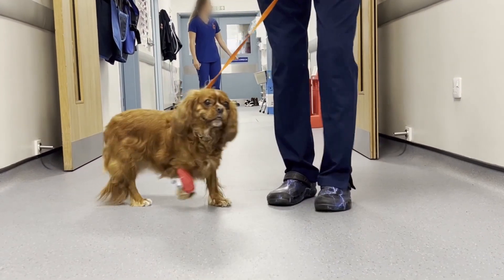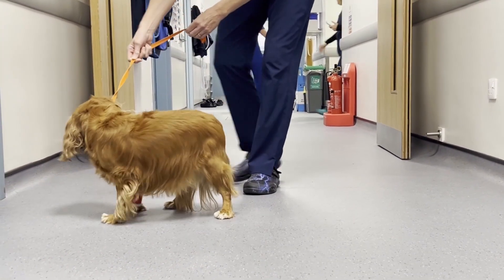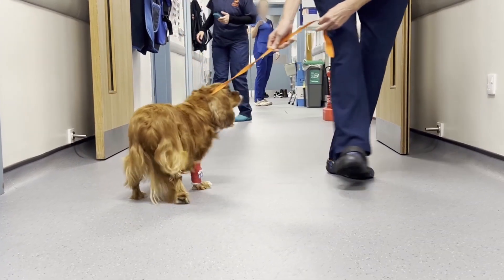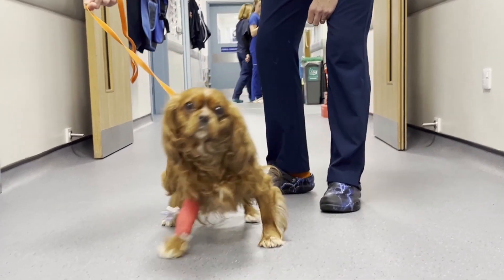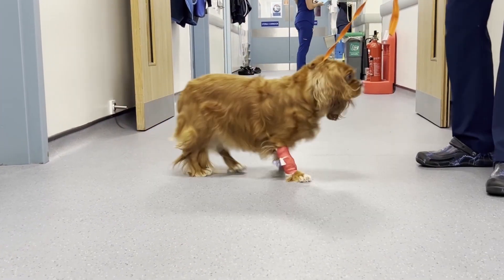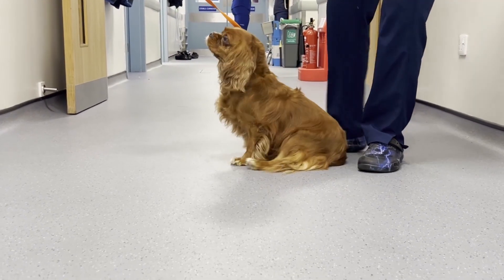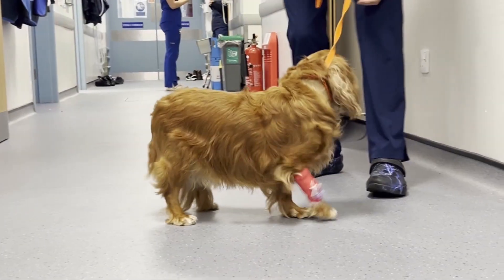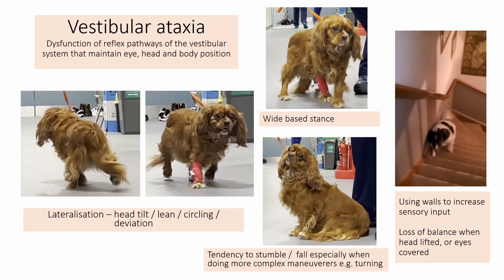Now we're circling her and she's struggling with that. Notice the wide base stance; she's not able to cross her legs properly. We're going clockwise to the right direction first, then going to the left is much more problematic and she struggles with that. So this gait is characteristic of a vestibular ataxia.